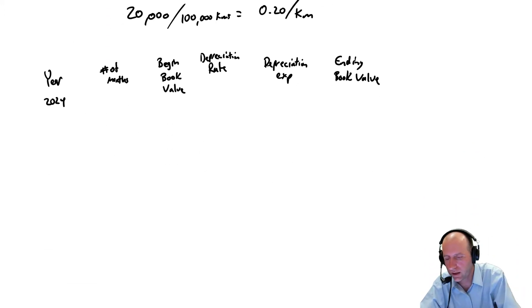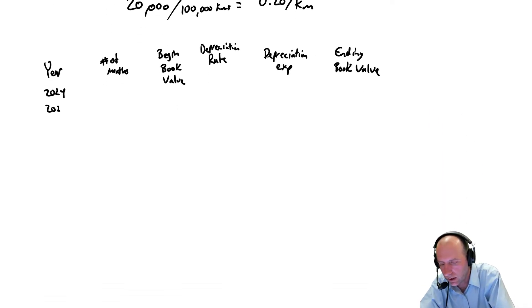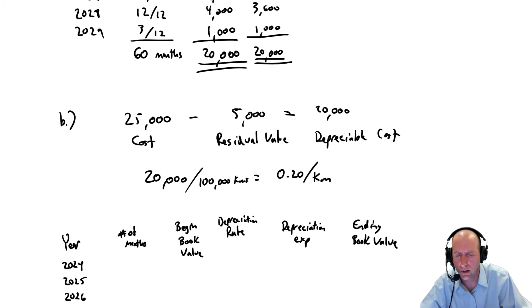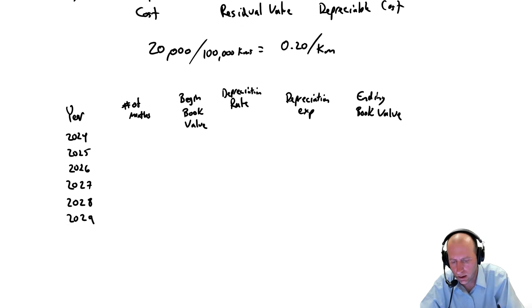I want this one to say beginning book value. We're going to have rate, depreciation rate, depreciation expense, and ending book value over here. So it's a bit of a table we're going to be making with quite a lot of calculations. Our starting year was 2024, and I can do all of our years: 2025, 2026, 2027, 2028, 2029.